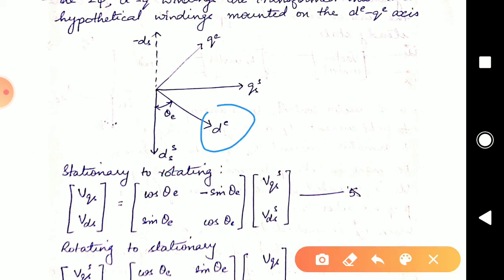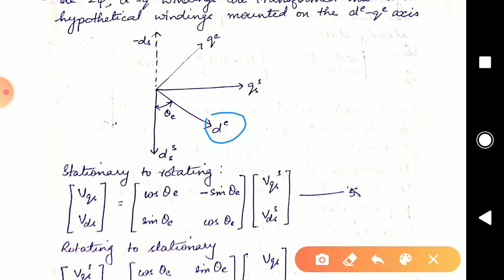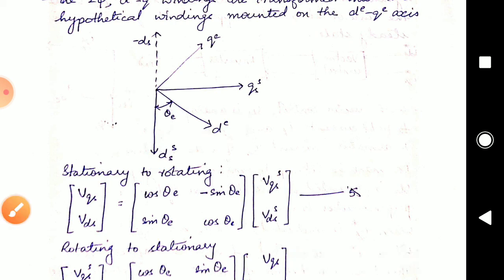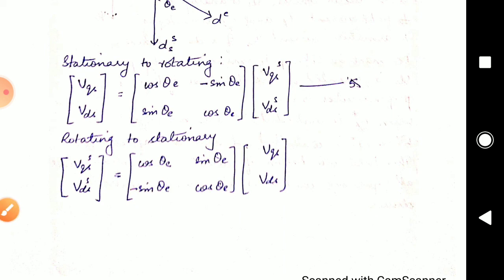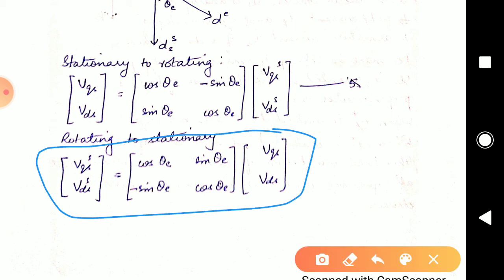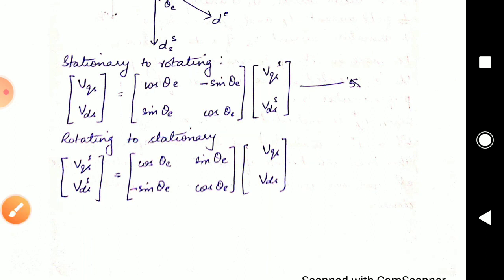Taking DE as the reference and resolving QS into DE — this angle was thetaE, so the other angle is 90 minus theta — giving sin(θE). Then with DE as reference and resolving VDSs, the angle between them is theta, giving cos(θE). Similarly, you can convert from rotating to stationary by taking the inverse of the above matrix. This was the Clark transformation and Park transformation. Please study this portion well — in the next video you will understand the need for these transformations. Thank you.